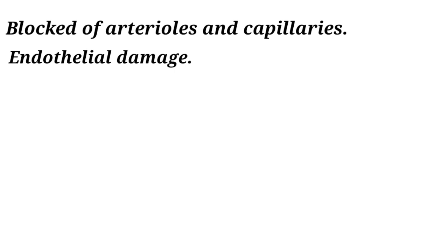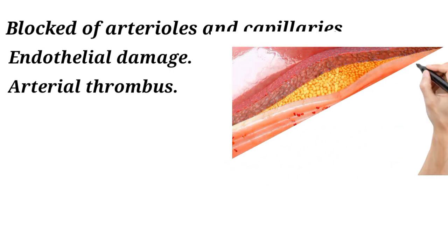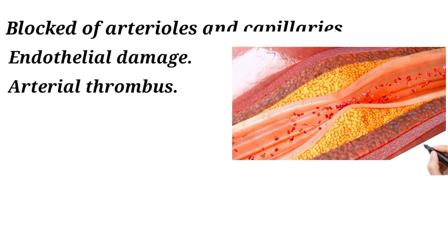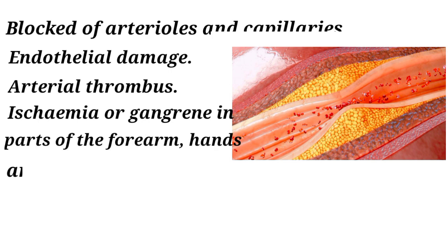Blockage of arterioles and capillaries occurs. Endothelial damage leads to arterial thrombus, caused by endarteritis, adenosine triphosphate release from damaged red cells, and aggregation of platelets — resulting in ischemia or gangrene in parts of the forearm, hand, and fingers.